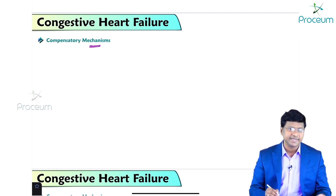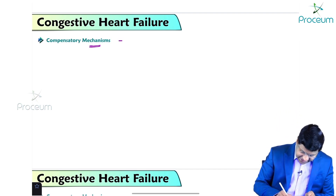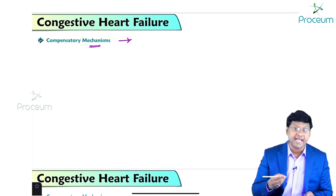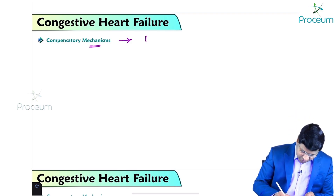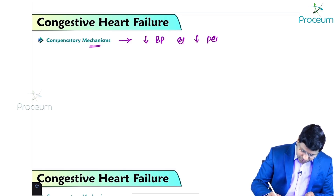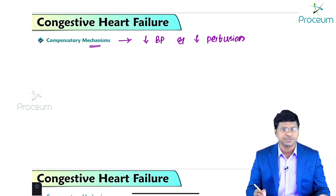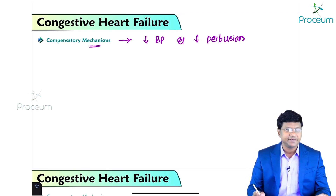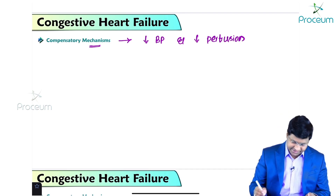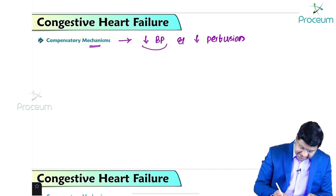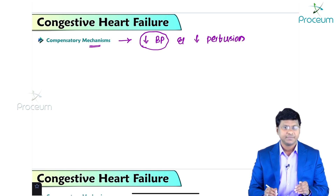The compensatory mechanisms are activated because of a fall in the blood pressure of the individual, which leads to decreased perfusion to the organs. As and when there is a decrease in blood pressure, the compensatory mechanisms get activated.